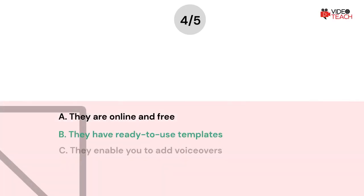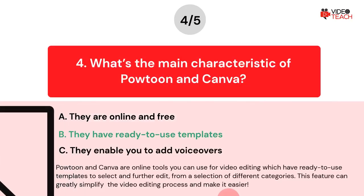The correct answer is Option B. Powtoon and Canva are online tools you can use for video editing, which have ready-to-use templates to select and further edit from a selection of different categories. This feature can greatly simplify the video editing process and make it easier.